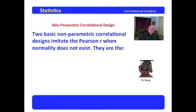Two basic nonparametric correlational designs imitate the Pearson R when normality does not exist. Now, I'm not saying there are only two. I'm just giving you two, two of the most common. And these are, first of all,